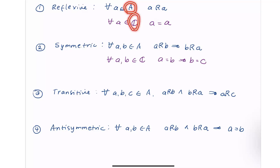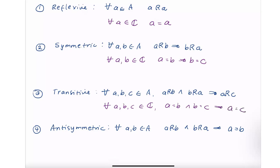For transitivity: for all A, B, C in C, if A equals B and B equals C, then A must equal C. For antisymmetric: for two elements in C, if A equals B and B equals A, then A must equal B. Yes, this is true. So we are done with our first example — the equality relation satisfies all four properties.